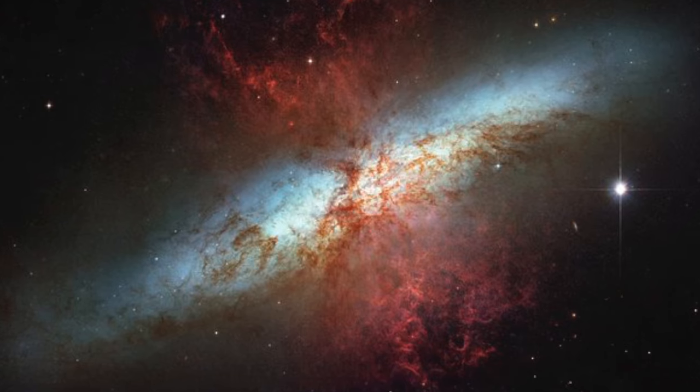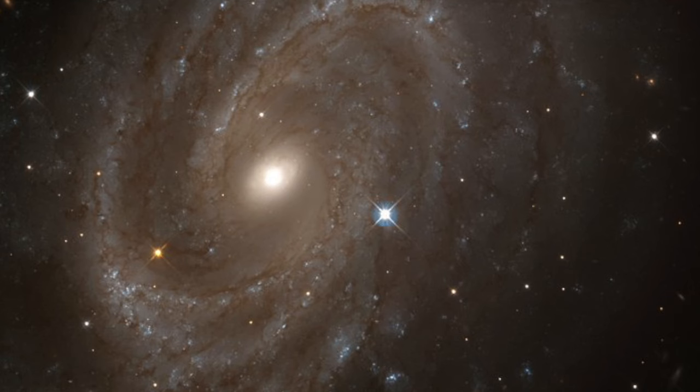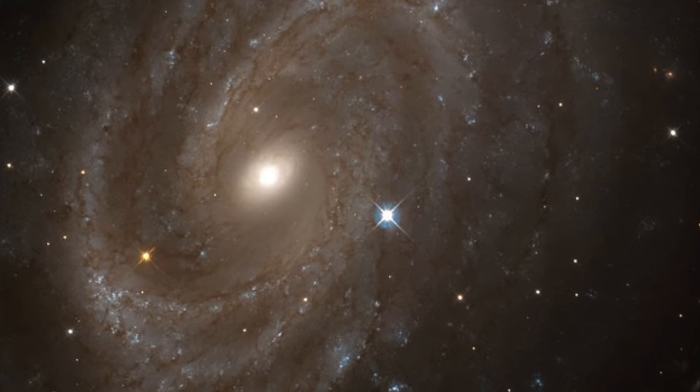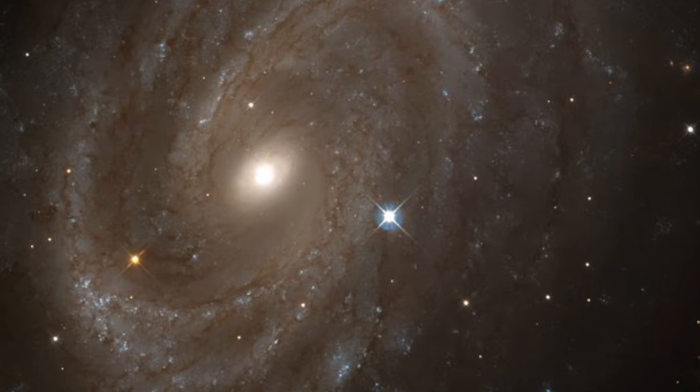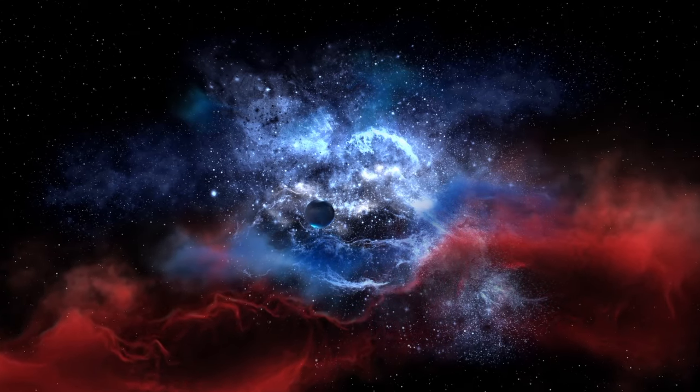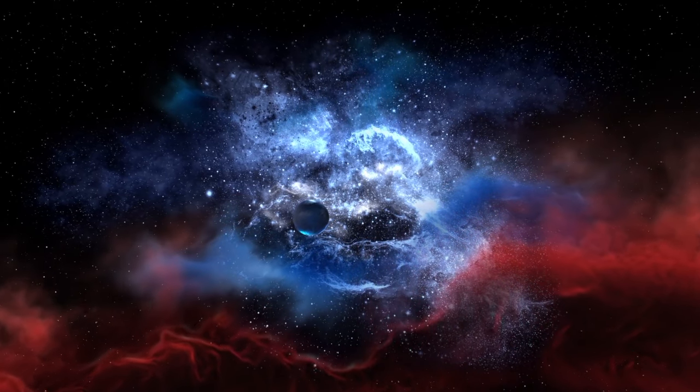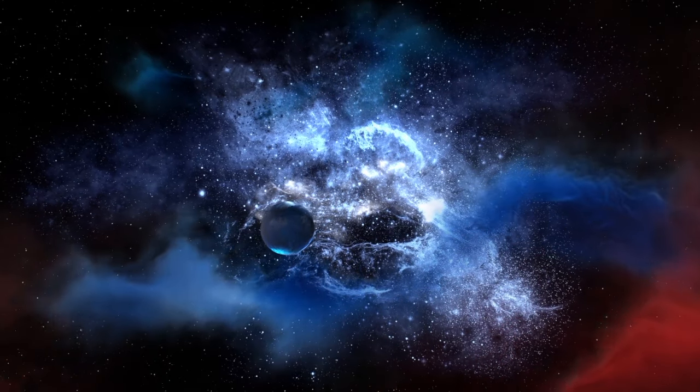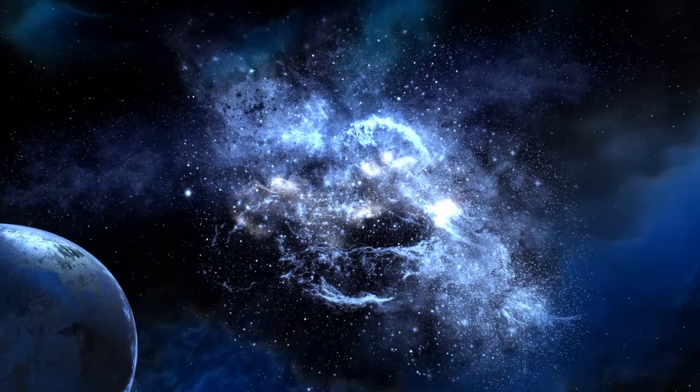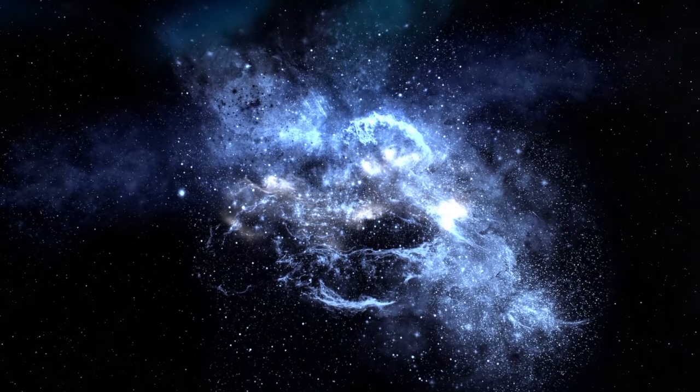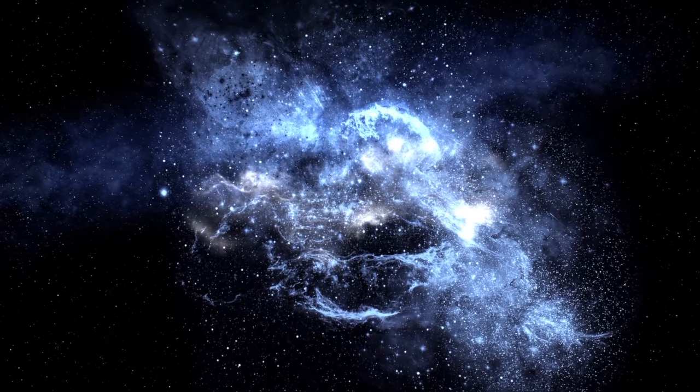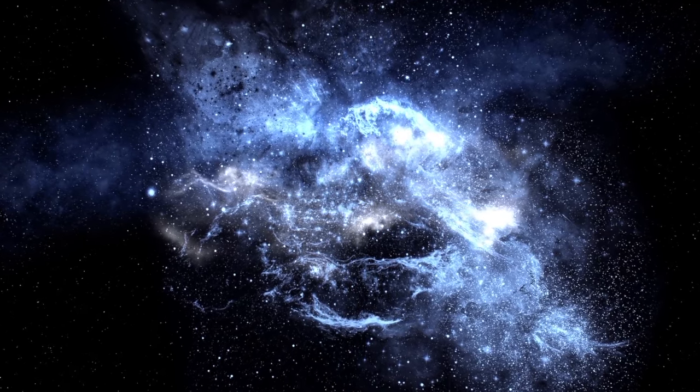The pulsar PSR J1841-0500 is a very distant pulsar at over 22,000 light years away. This pulsar was discovered in 2008 and seemed to be normal, pulsing regularly every 0.9 seconds. But in 2009, it stopped completely. After a few days, it still wasn't there. After a few months, it was still not there. This pulsar was silent for 580 days before it abruptly started pulsing again in August of 2011. So far, no other pulsar like this has been found, and exactly what happened there is unknown.